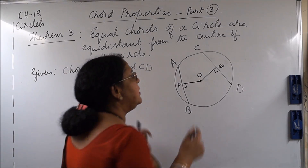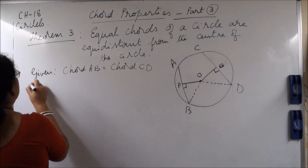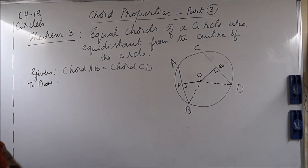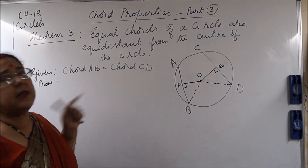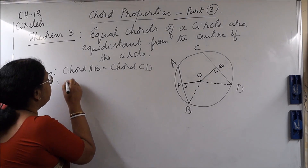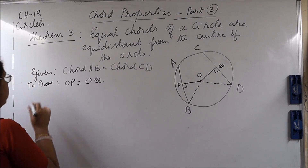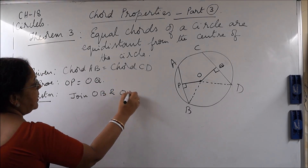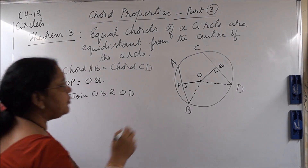So now let us write what we need to prove. We want to verify whether, if chord AB and chord CD are equal, whether they are equidistant or not — that is, whether OP is equal to OQ or not. In order to prove that, we have done some construction: join OB and OD. Whatever we do in construction, you must also draw in dotted lines.